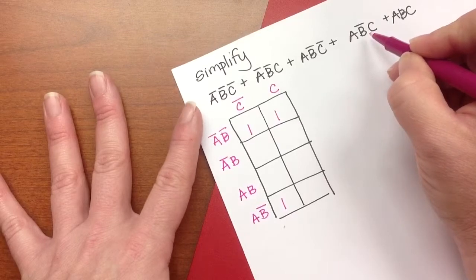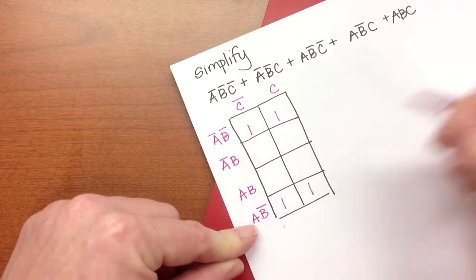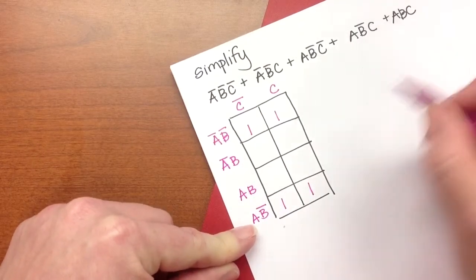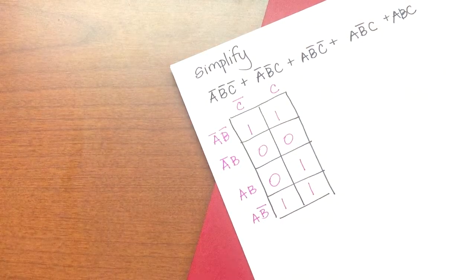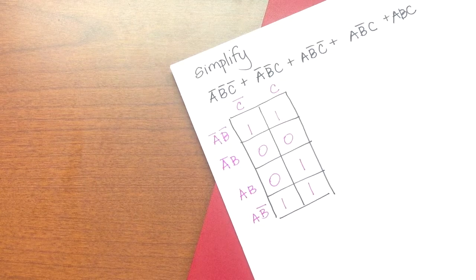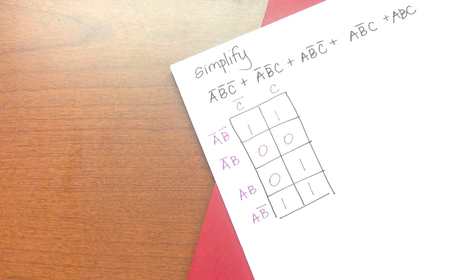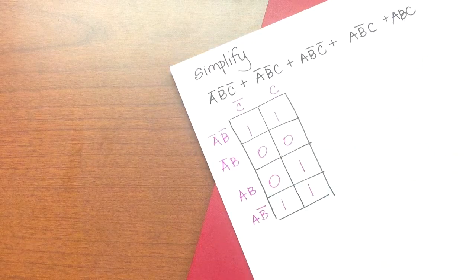A, not B, C here. And A, B, C here. I'll put zeros everywhere else. So now what I need to do is look for isolated ones. And I don't have any isolated ones in this expression.